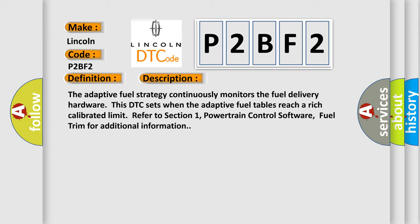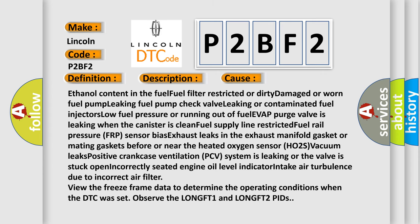This diagnostic error occurs most often in these cases: ethanol content in the fuel, fuel filter restricted or dirty, damaged or worn fuel pump, leaking fuel pump check valve, leaking or contaminated fuel injectors, low fuel pressure or running out of fuel, EVAP purge valve leaking when the canister is clean, fuel supply line restricted, fuel rail pressure (FRP) sensor bias, exhaust leaks in the exhaust manifold gasket or mating gaskets before or near the heated oxygen sensor (HO2S), vacuum leaks, PCV system leaking or valve stuck open, incorrectly seated engine oil level indicator, or intake air turbulence due to incorrect air filter. View the freeze frame data to determine the operating conditions when the DTC was set, and observe the LONGFT-1 and LONGFT-2 PIDs.